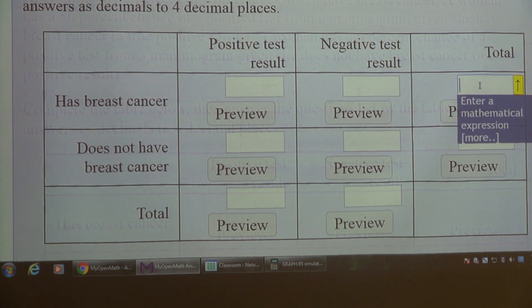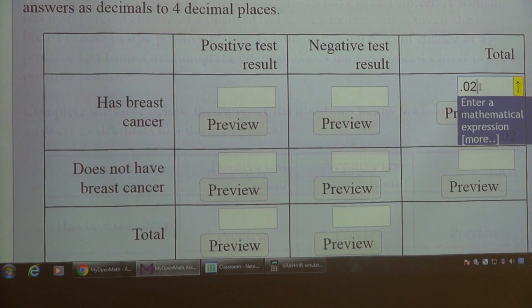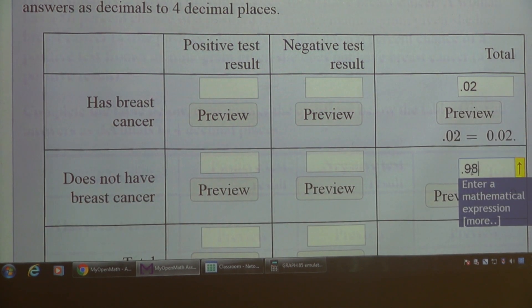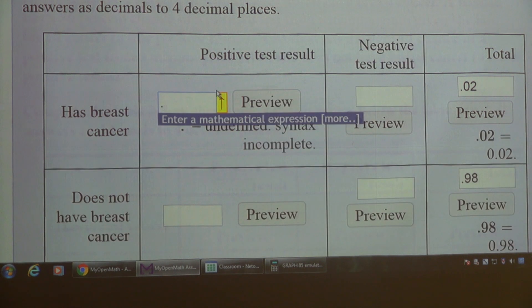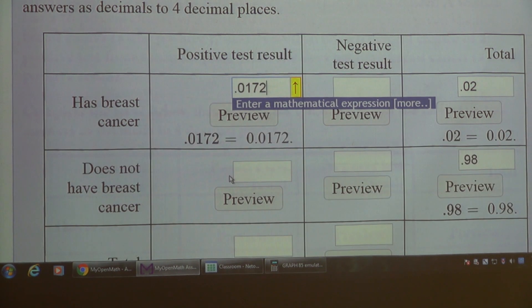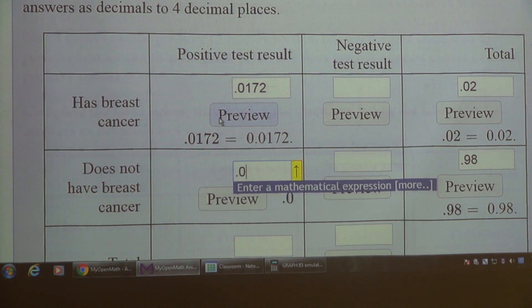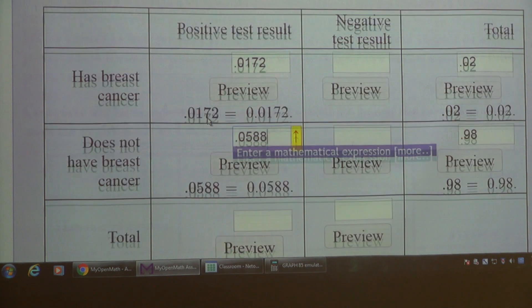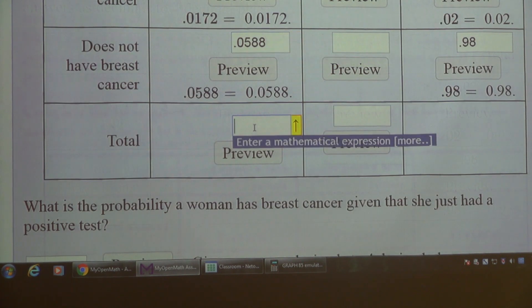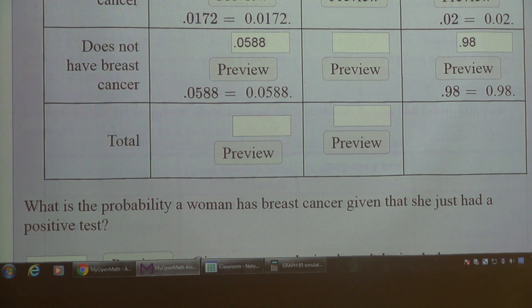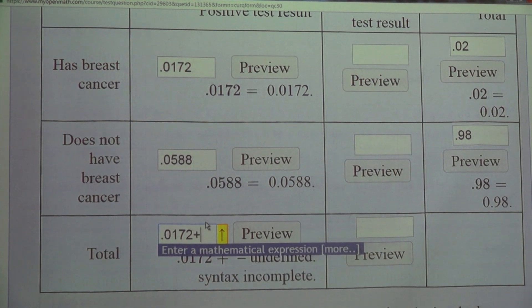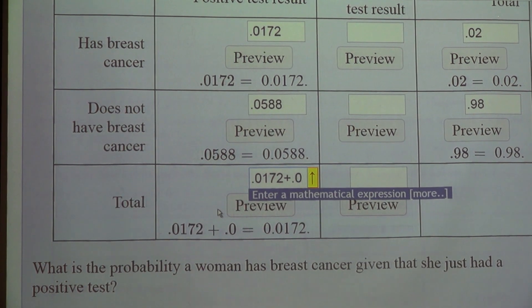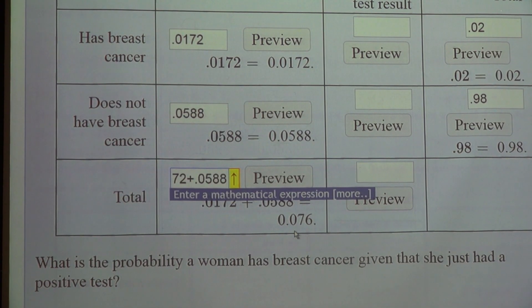So for example this one is 0.02, this one is 0.98. This one right here is 0.0172 and this one right here is 0.0588. Now down here if you don't have a calculator or even if you do, what you can do is just copy and paste these in here. You can do control C and paste that in and just say plus. If you don't feel like copying it and pasting it you can just type it in. So I'll do 0.0588 and you'll see that it gives you the total right there, 0.076.